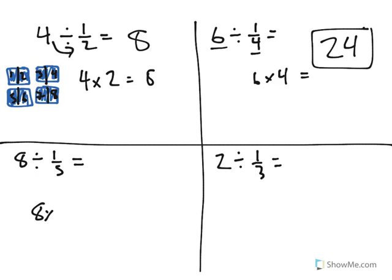8 divided by 1 fifth would be 8 times 5, or 40.